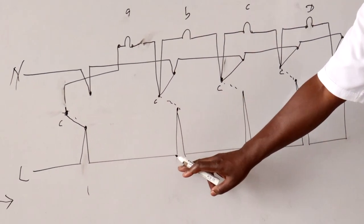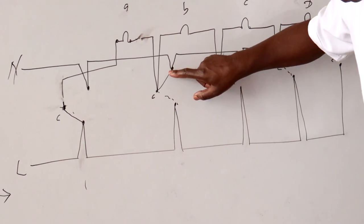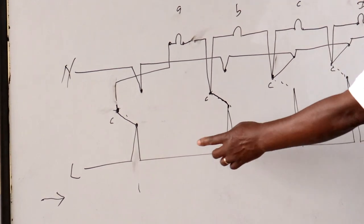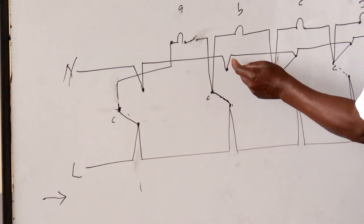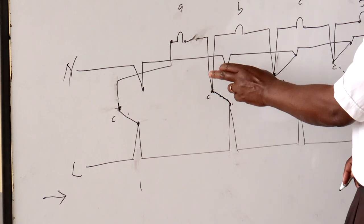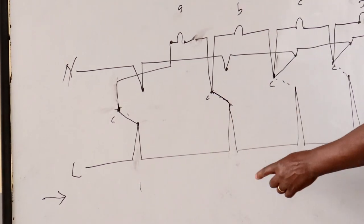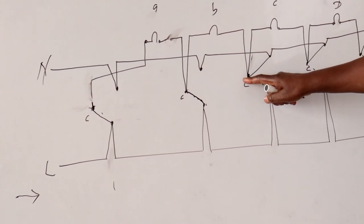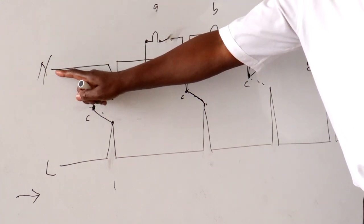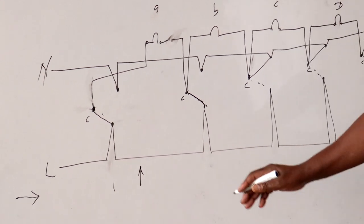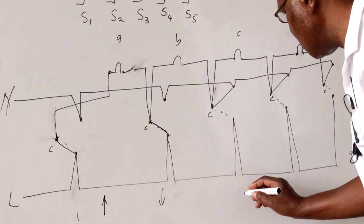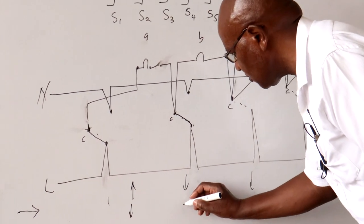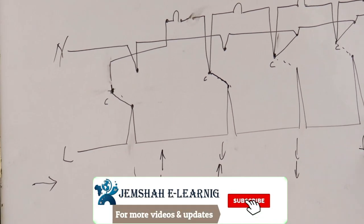Then I move on and come to the next switching position. When I flip this switch, the path for the first lamp back to neutral is removed. So that lamp is now connected one end to live and the other end also to live — it goes off. The live now passes through lamp B to the neutral, so lamp B comes on. So: lamp one off, lamp two on, lamps three and four still off.